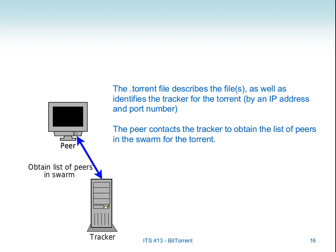Our initial peer that enters the network contacts a tracker. The tracker sends back a response containing a list of information including IP addresses of other peers—other computers on the internet. Those other peers should have the entire torrent if they are seeds, or parts of the torrent if they are downloaders. Our peer gets the addresses of some other peers and starts to contact them.